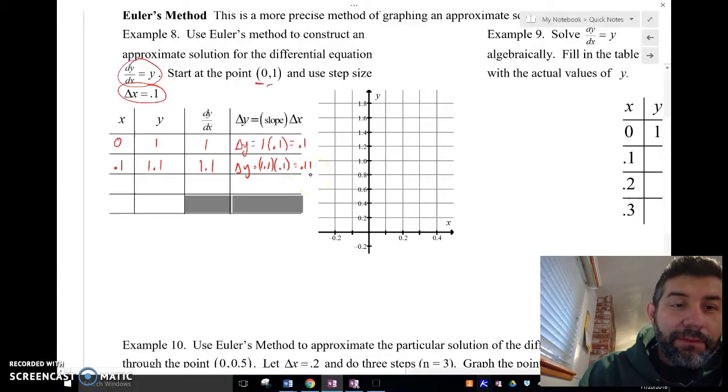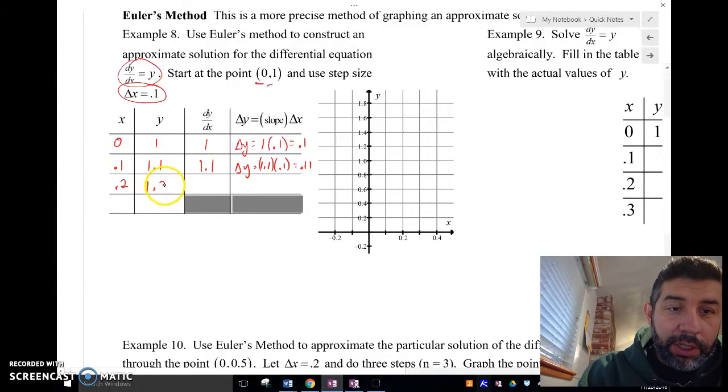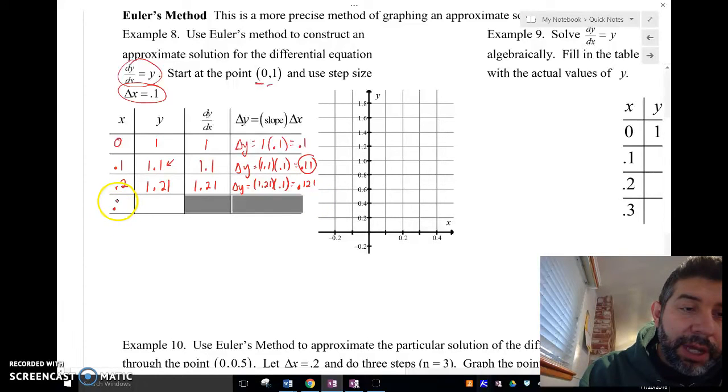So then I go and I do that again. So I'm going to have 0.2 now because I added 0.1 to 0.1. I'm going to have 1.21 because I added my now what was 0.11. I added it to 1.1 and I got 1.21. Plug that into my dy/dx and I'm going to get 1.21. My delta y in this case now is 1.21 times 0.1, which gives me 0.121. And I'll do it again. Except, I will leave off right here, my last one, 1.331.